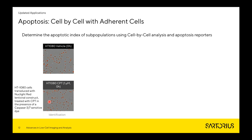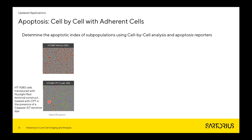In this assay, we have HT1080 fibrosarcoma cells. These have been transduced to express a red nuclear protein, and they've been cultured in the presence of a caspase 3/7-sensitive dye, which gives us a readout when the cells begin to undergo apoptosis. The cells have been treated with either a vehicle control or camptothecin. At 30 hours, the vehicle control cells look very nice and healthy — they've proliferated and formed a confluent layer — whereas the camptothecin-treated cells look very different. We see green fluorescence as they begin to undergo apoptosis, granulation, and cytoplasmic swellings. We can perform cell-by-cell segmentation on these objects and get cell count information.